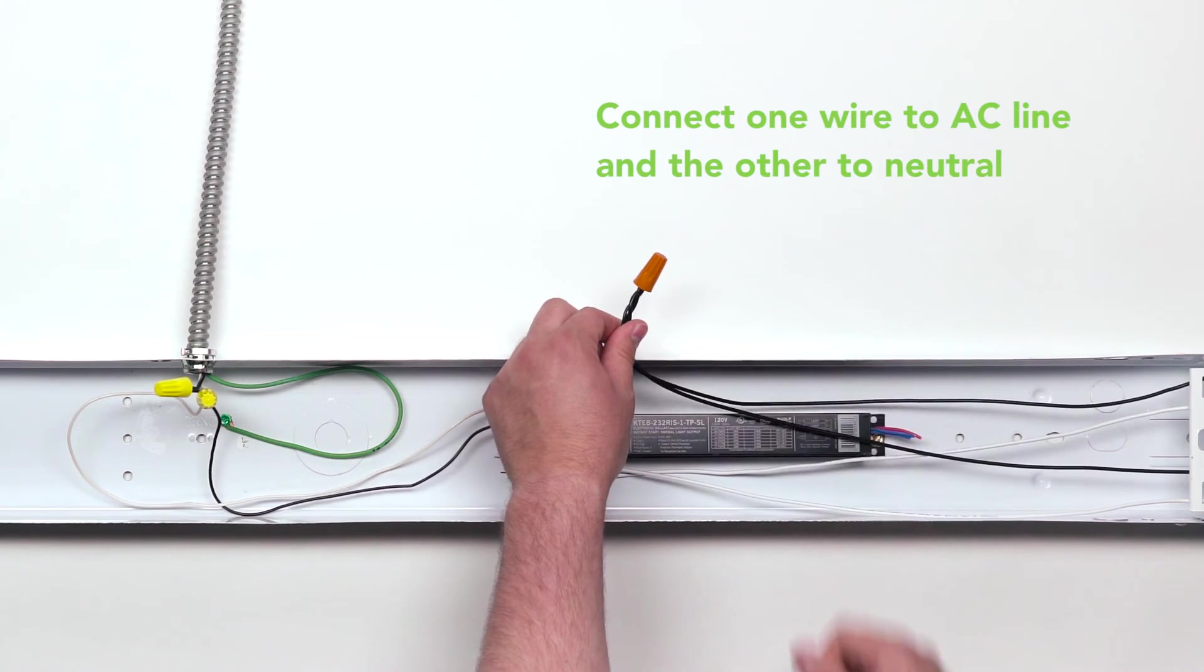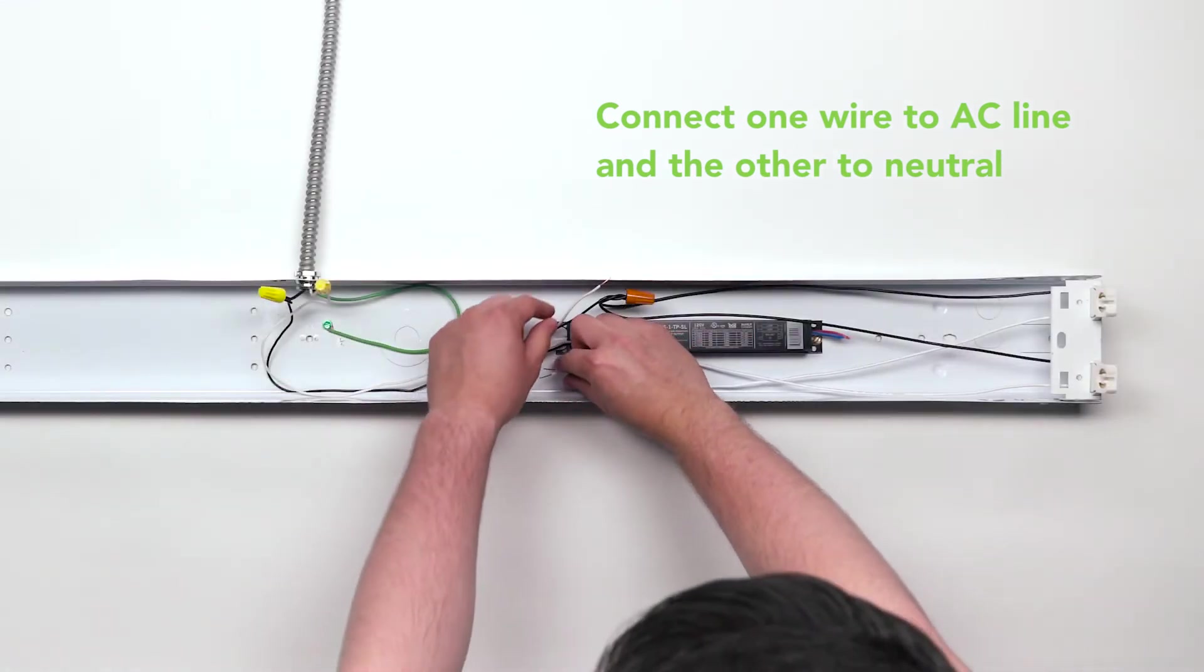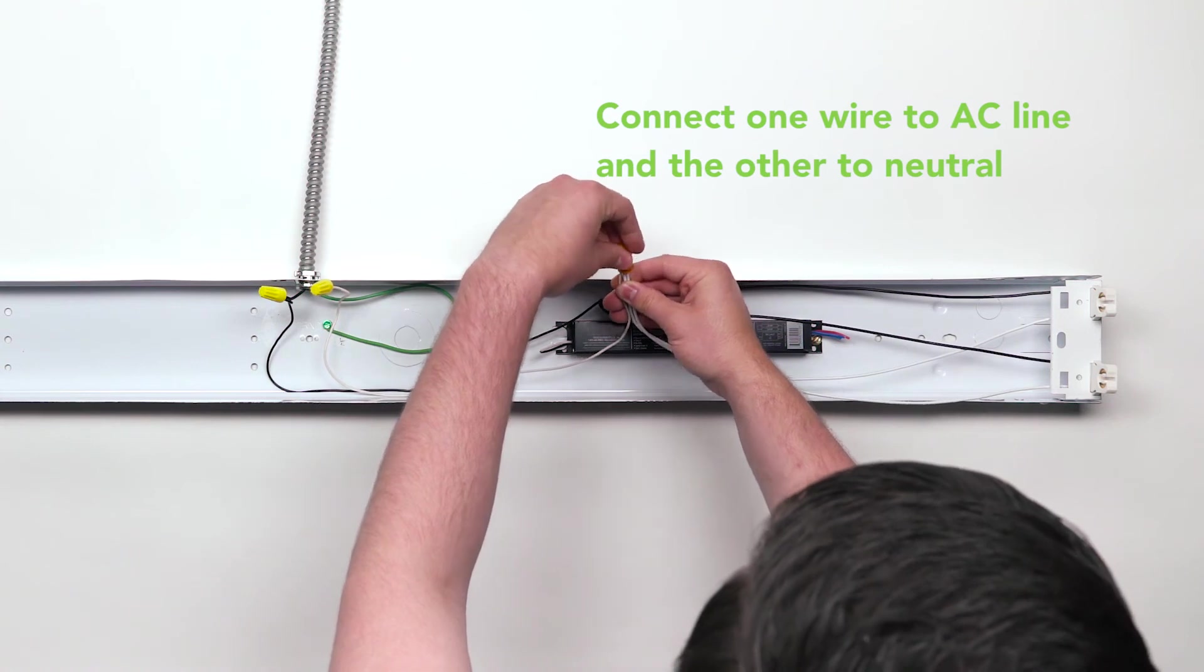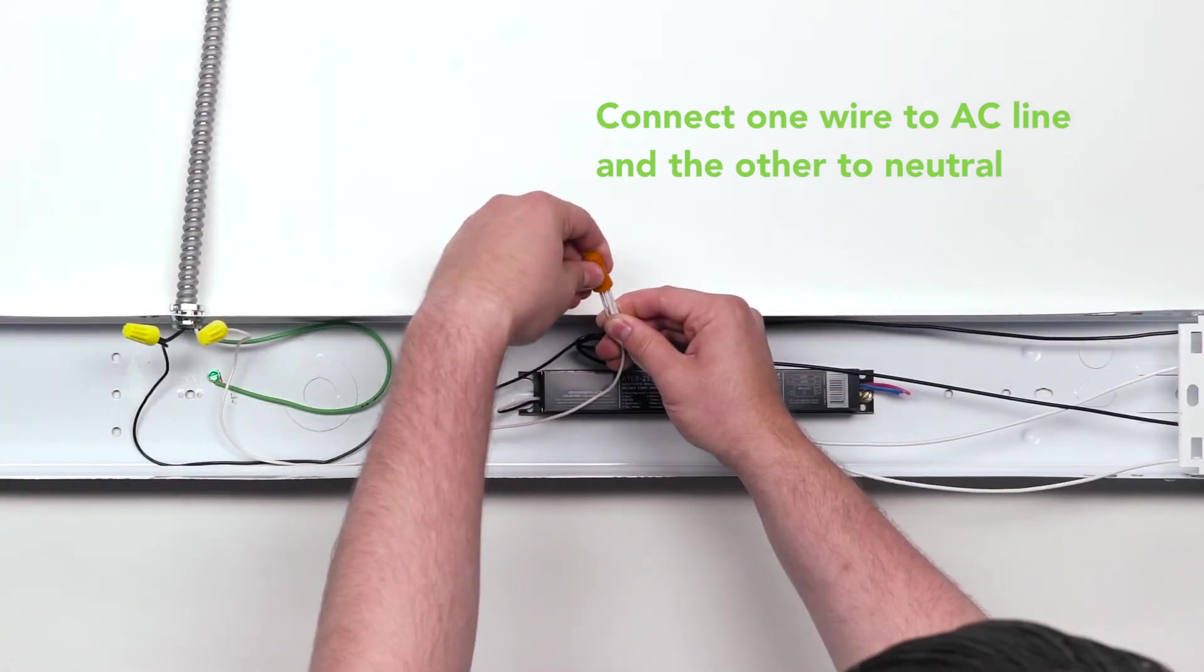If you are using the provided pre-wired lamp holders, this is usually as simple as connecting the black lamp holder wire to the black AC line wire and white lamp holder wire to the white neutral wire.